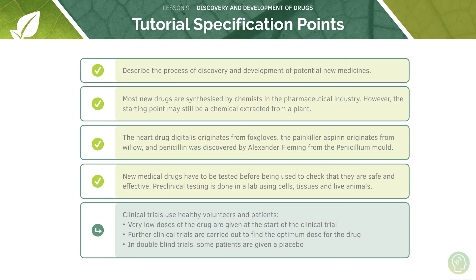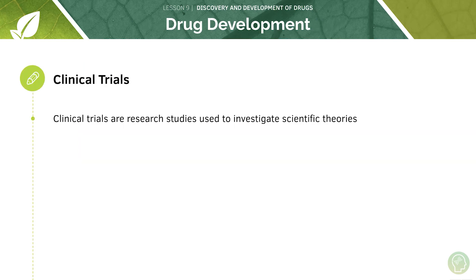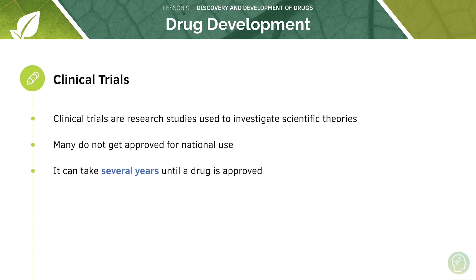Now let's move on to look at clinical trials. In general there are five stages to clinical trials. Clinical trials are research studies used to investigate scientific theories. Many drugs don't actually get approved for national use, and it takes years and billions of pounds until a drug is actually approved. These clinical trials are very costly and very in-depth, so it's not an easy process to develop a drug.